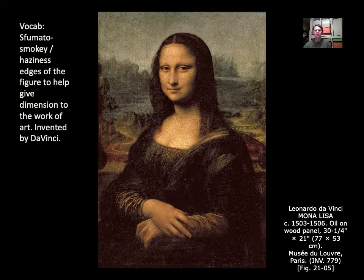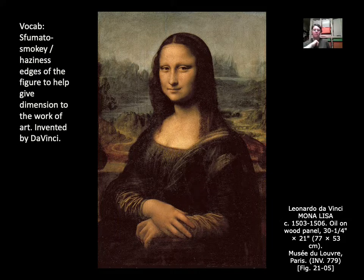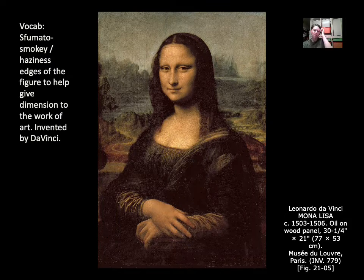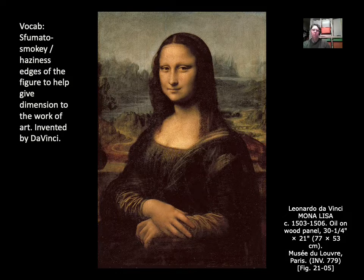We know that the sitter for the portrait was a wife of a lawyer, but we don't know much about her — she was of no particular social standing, upper middle class but not royalty. Leonardo breaks some conventions of portraiture that had been established in the Early Renaissance with this work. That's really why the Mona Lisa is so famous — it changed the face of portraiture forever.